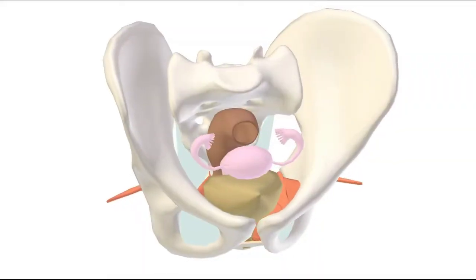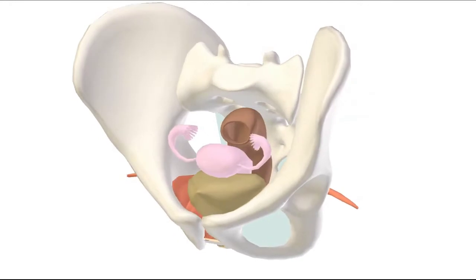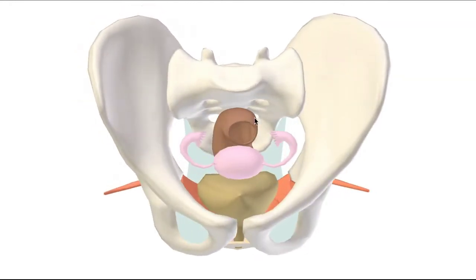In order to better appreciate the space that is the ischioanal fossa, let's first get our bearings. So here we have the pelvis, which I'm going to make a sagittal cut through.